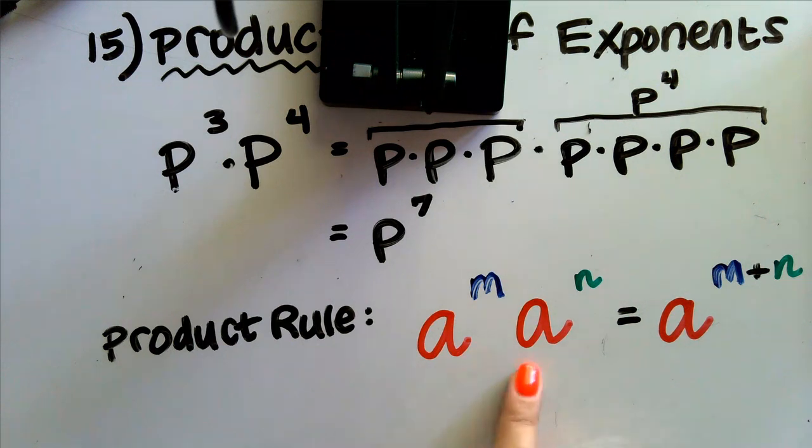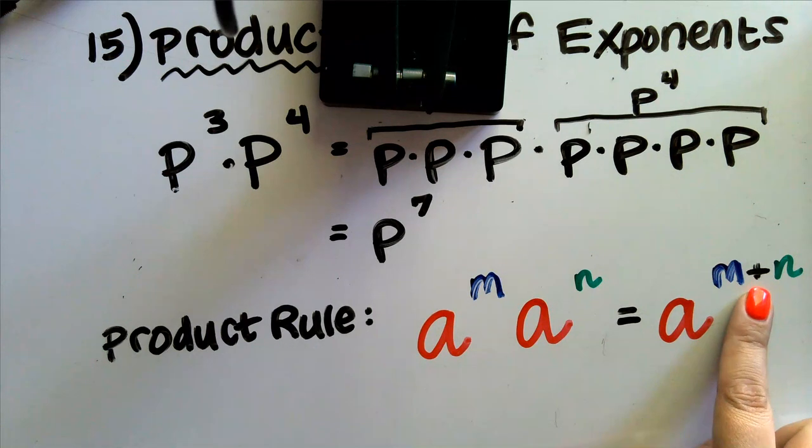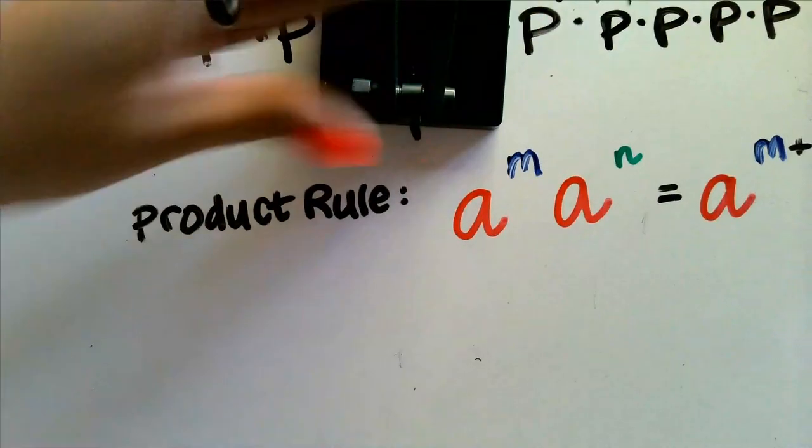Whenever we have the same base being multiplied together with those exponents, all we need to do is add the exponents together. Okay, not too bad. So let's just go ahead and do one more quick example.